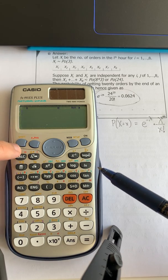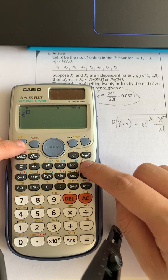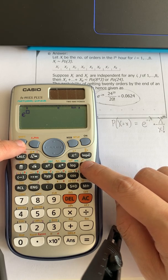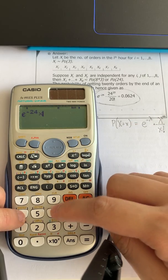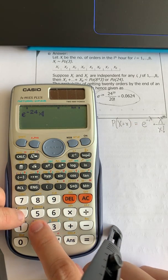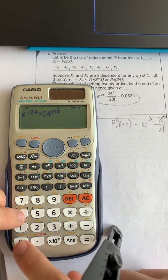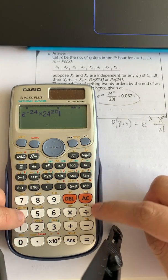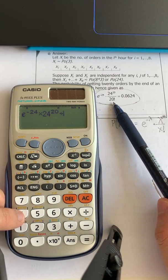Therefore we need to type shift this one and then you have the natural logarithm and minus 24, and then multiply - the lambda is 24 with the power of 20. And then divide by 20 factorial.